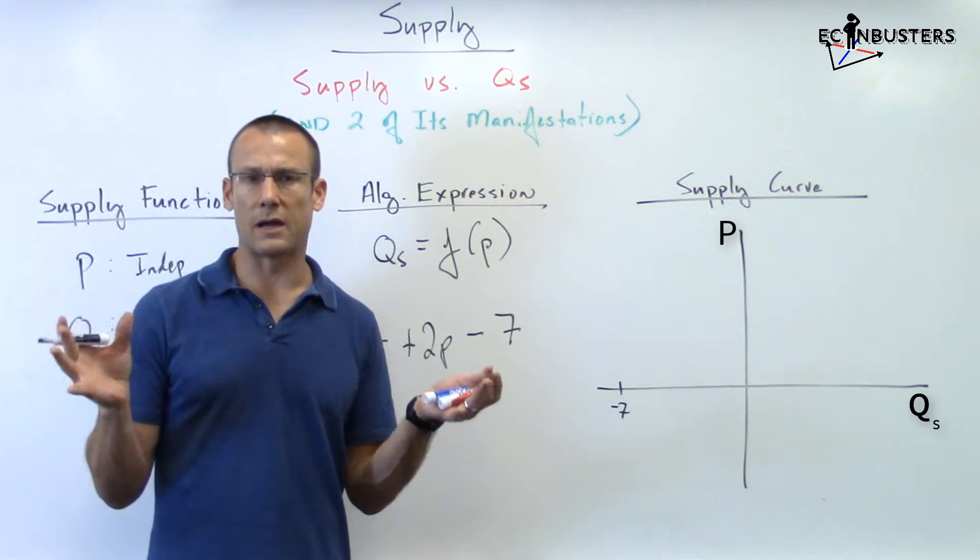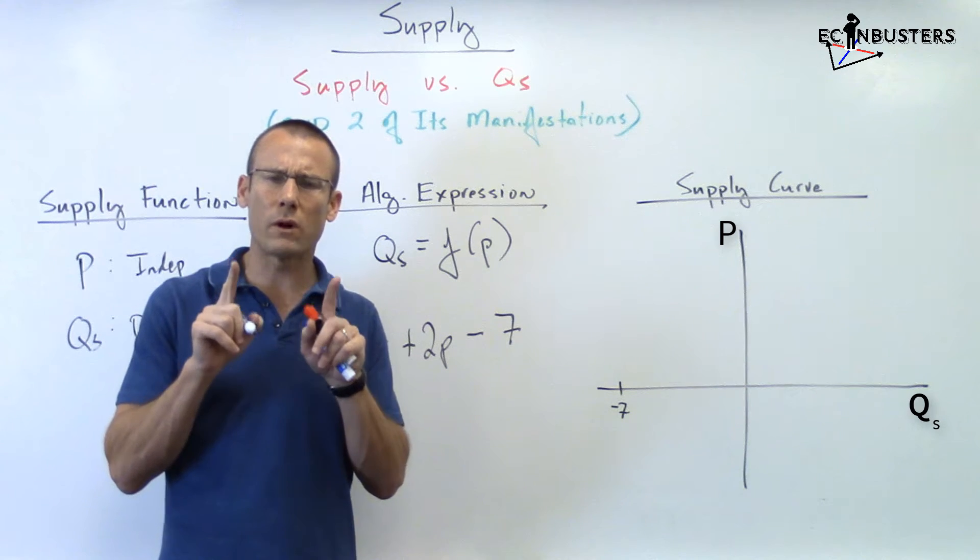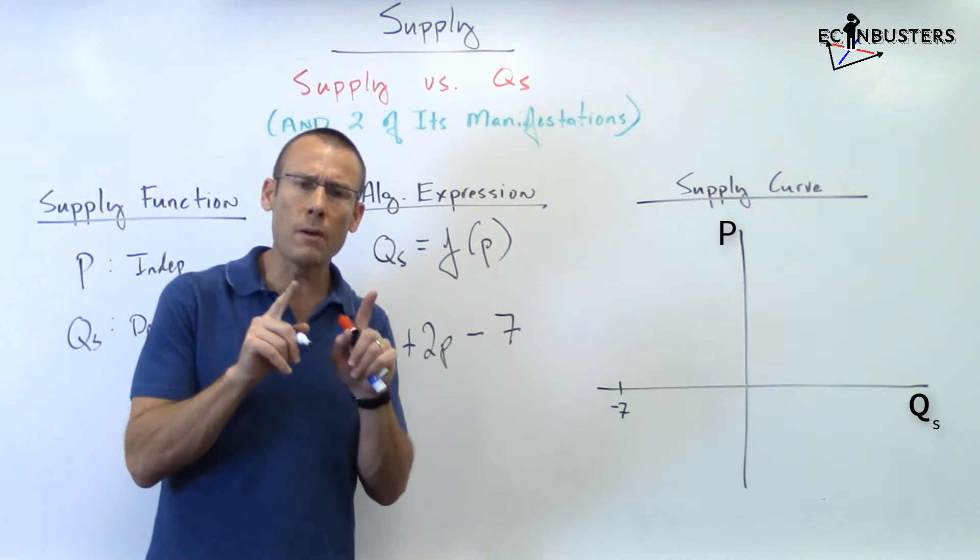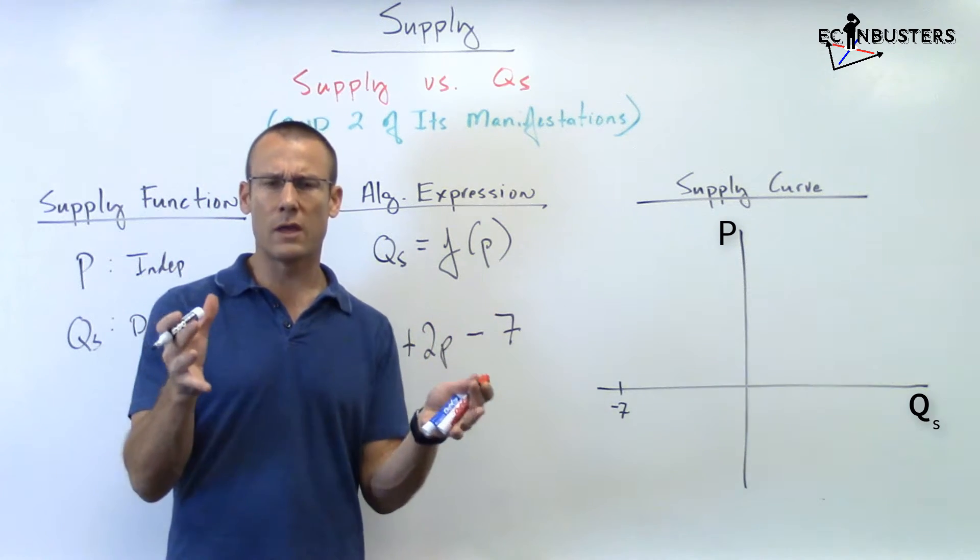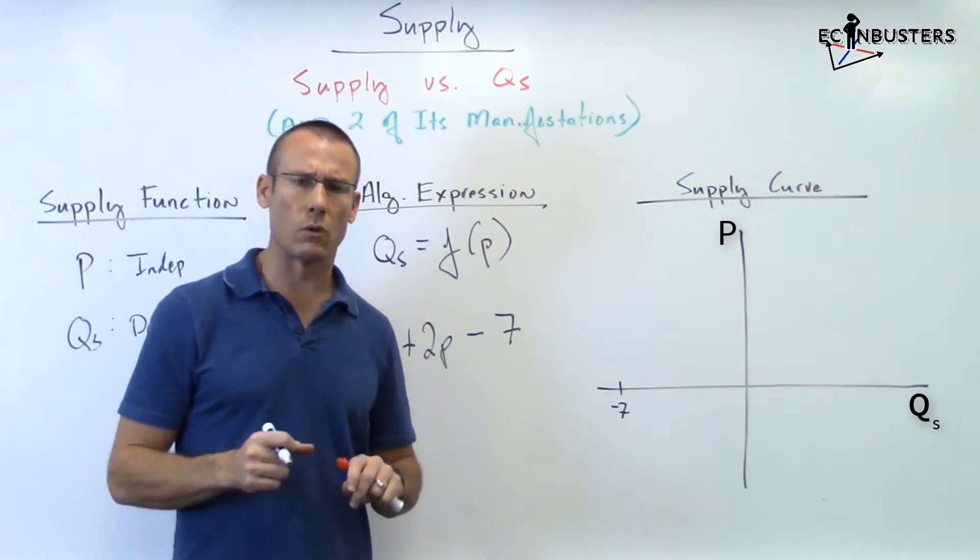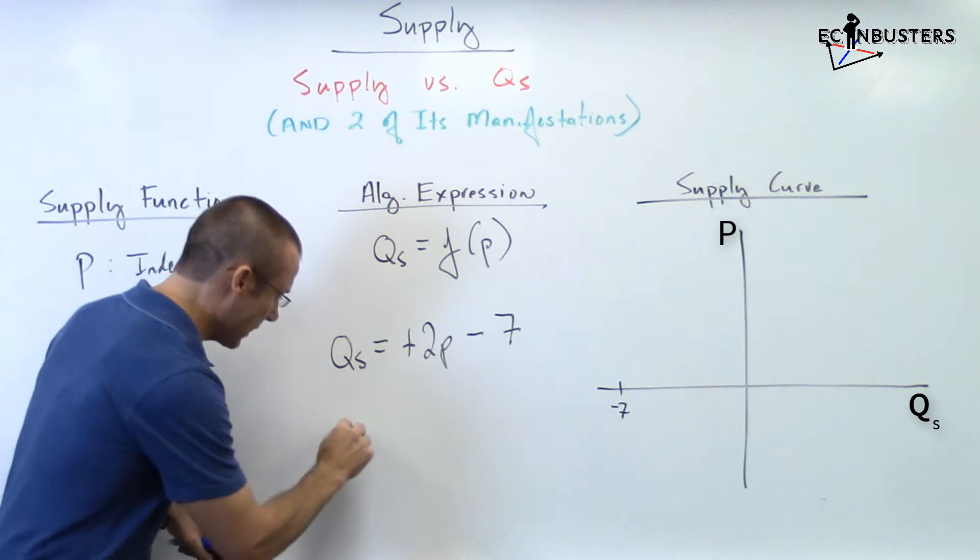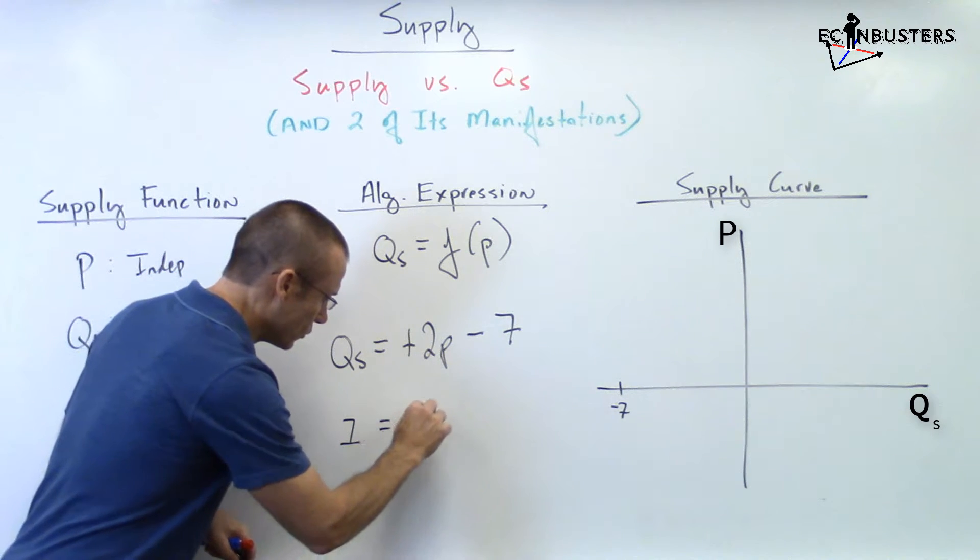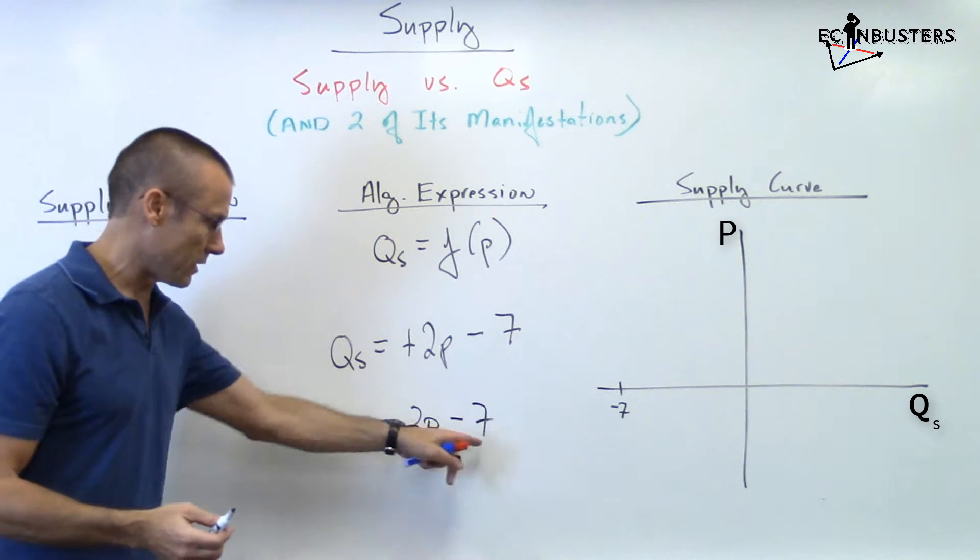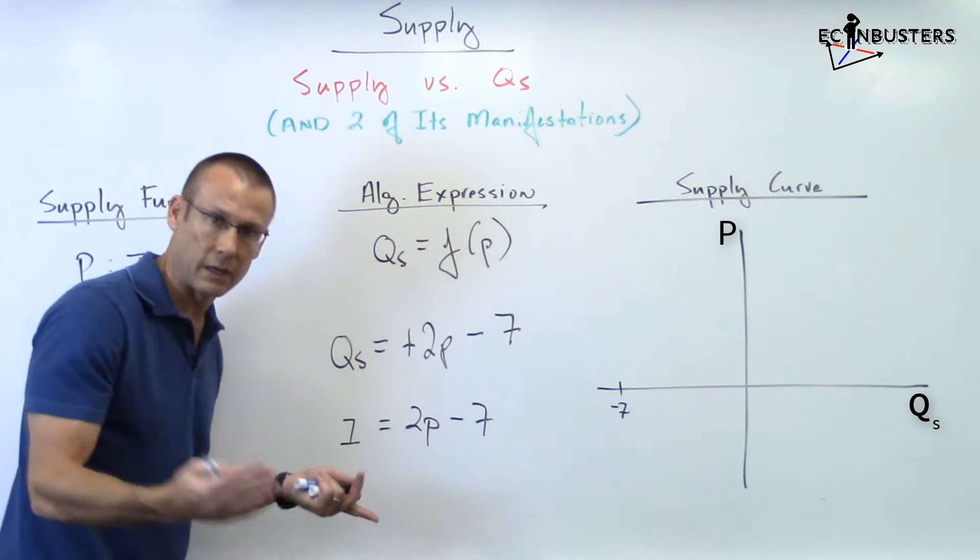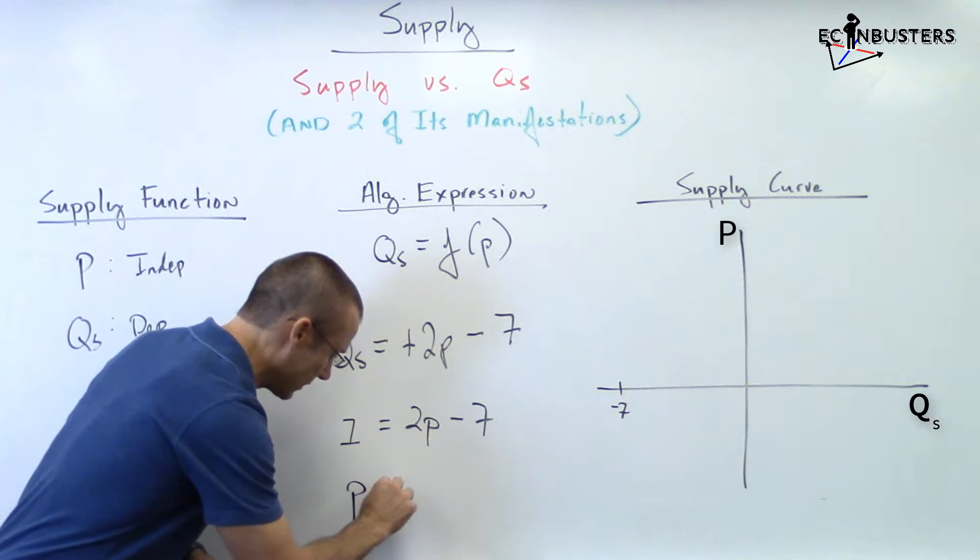So we're never going to supply a negative seven, that's right. What we want to know is: at what price will the quantity supplied be one? Let me say that again: what we really want to know is, at what price will the quantity supplied be one? How are we going to figure that out? I'm going to go back to the algebraic expression. Quantity supplied, I'm going to make it equal to one: 1 = 2P - 7. Not hard to solve, right? Bring the seven over, we've got 8 = 2P, divide both sides by two. I'm just going to jump right to the end: price equals four dollars. So we're not going to supply anything until we get to a price of four dollars.